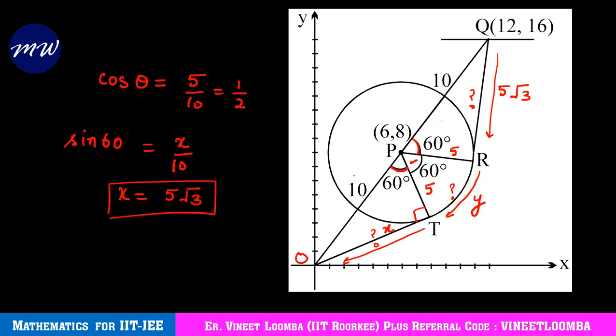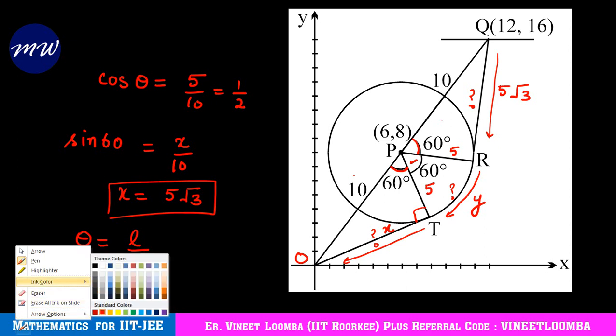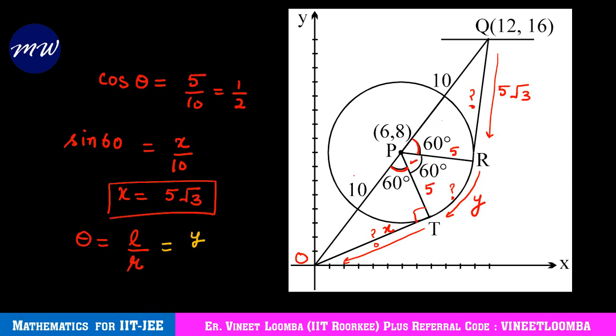What remains is this arc length y. We know that theta equals l upon r. Here l is what we need to find, that is y, and r is 5. Theta you need to keep in radians, so 60 degrees can be kept as pi by 3 radians. So we have the value of y as 5 pi by 3. So we have y, we have x.